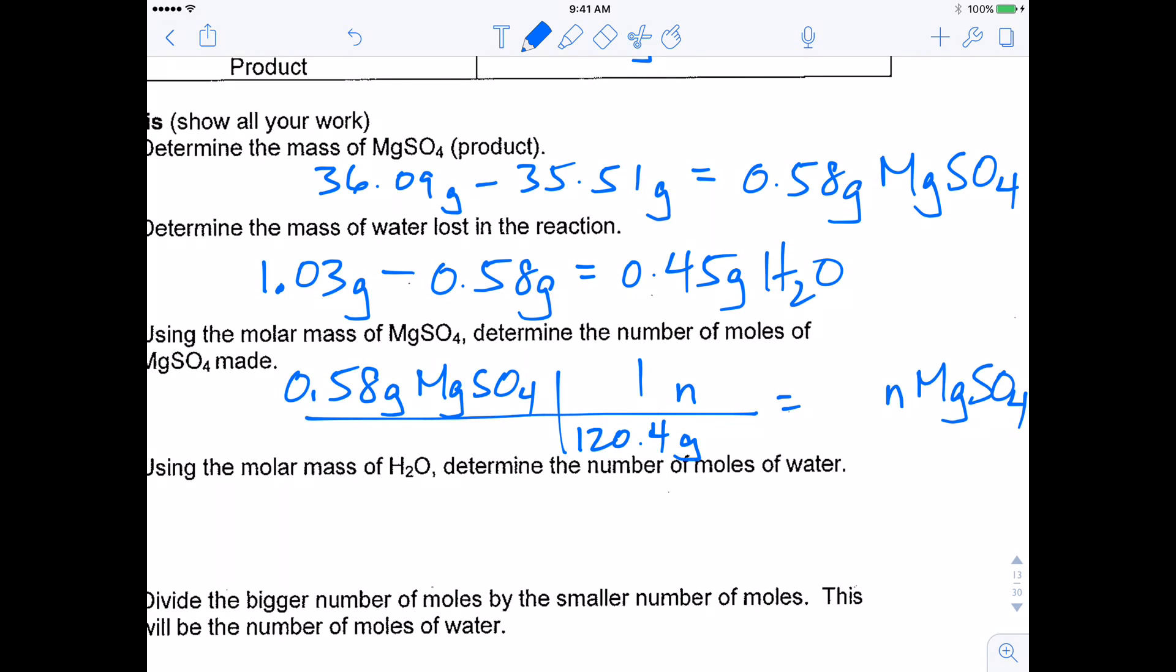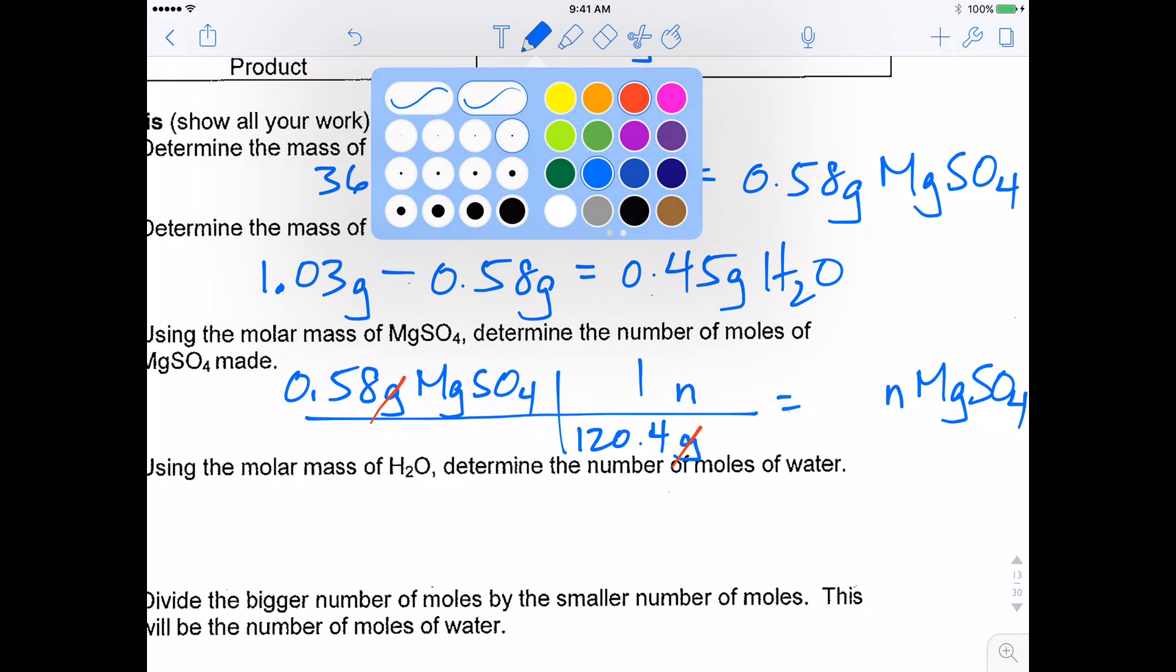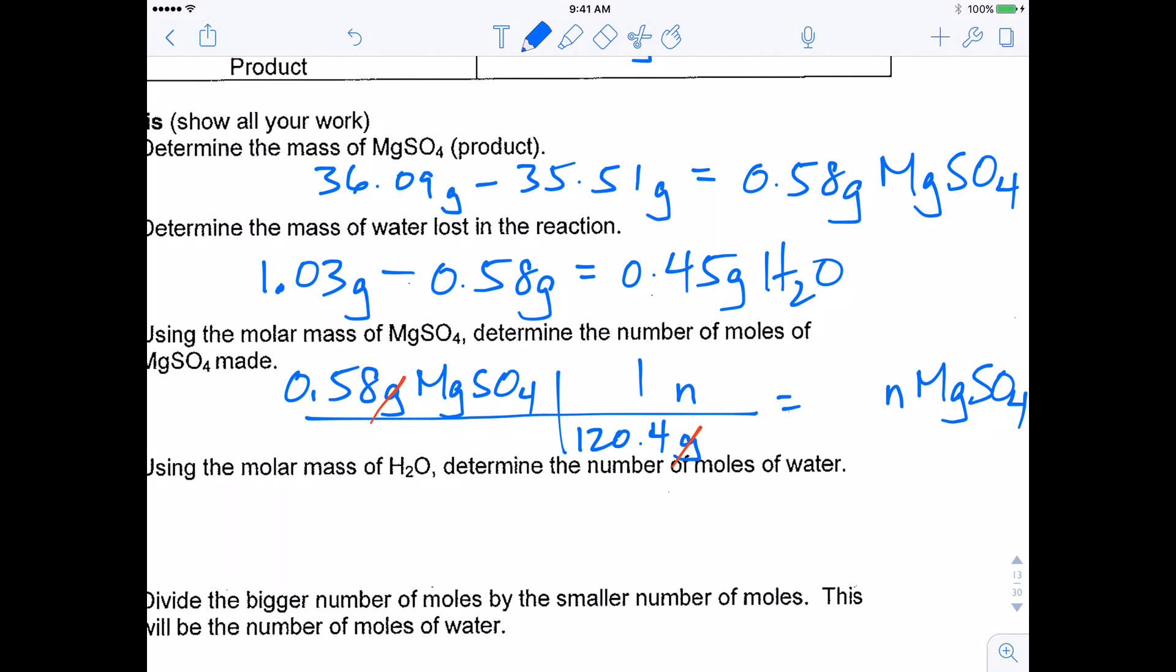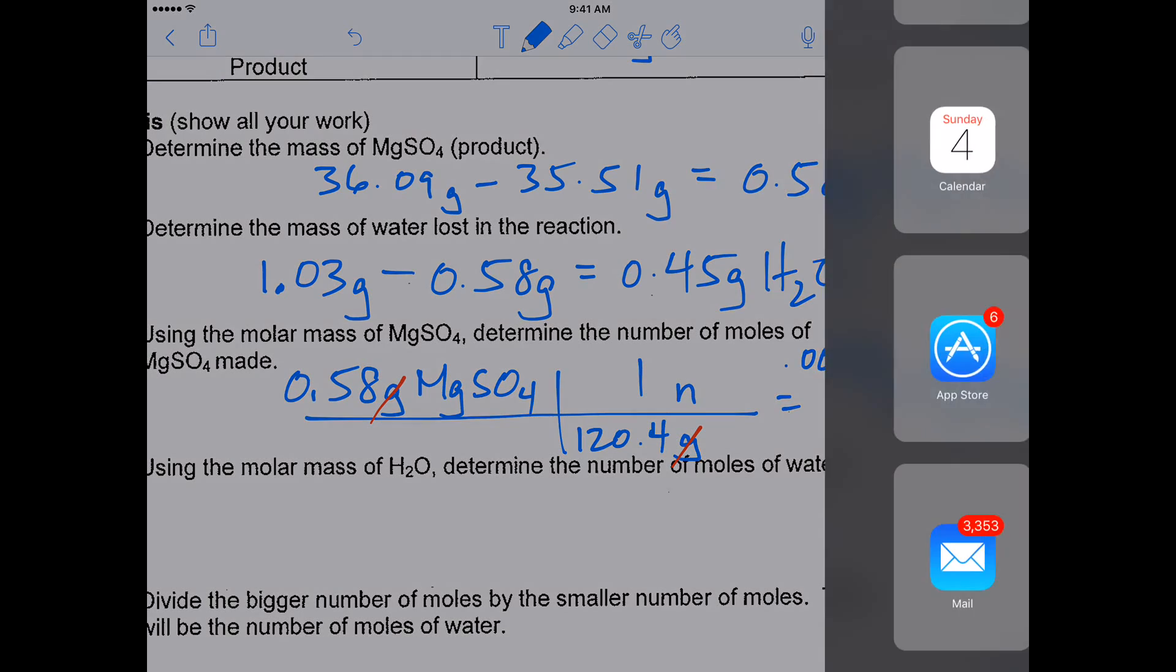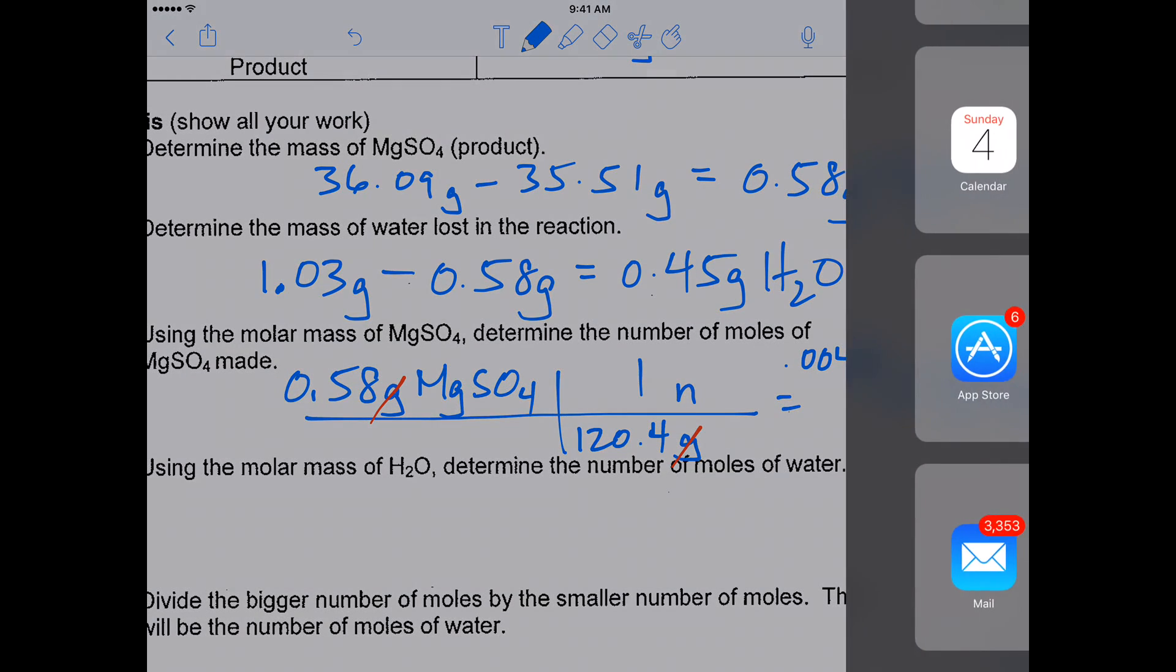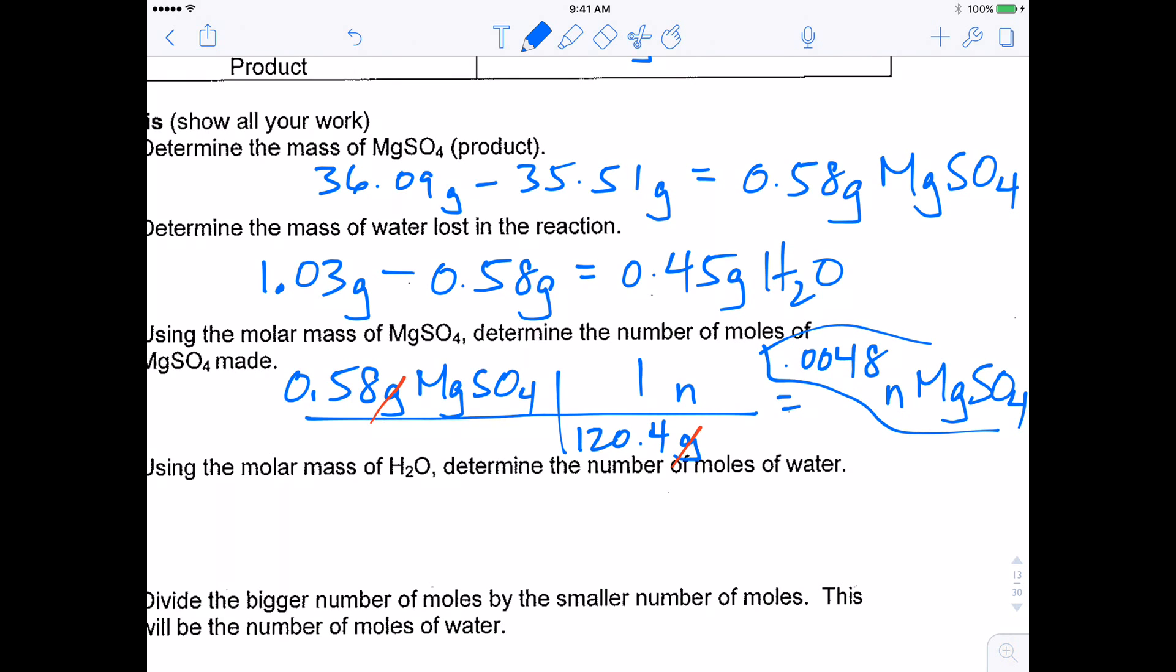So my units of grams will cancel. That's how I know I put everything in the right spot. I'm left with the units of moles, which is what I want. And so now, doing my math, 0.58 times 1 divided by 120.4, we get 0.0048. 0.0048 moles of MgSO4.